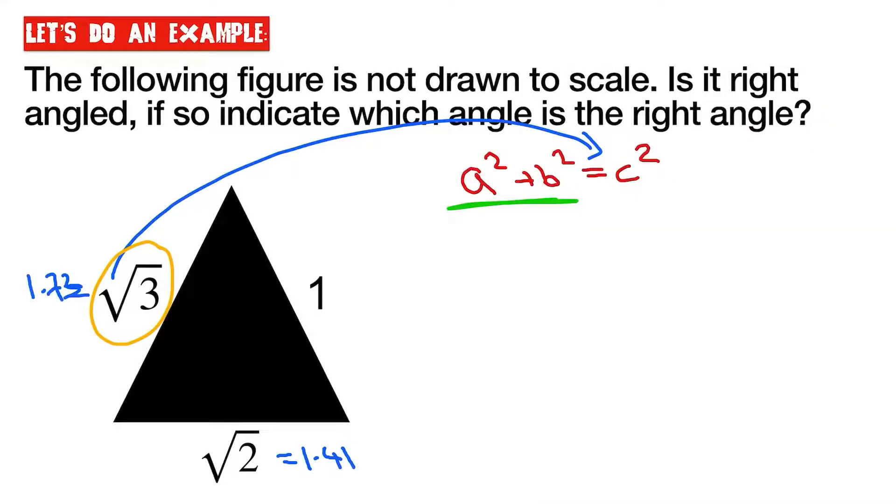Which means that if this was a right angle triangle, then the right angle would have to be here. Because remember, the hypotenuse or the longest side of a triangle is always opposite the right angle. So let's set this up then.